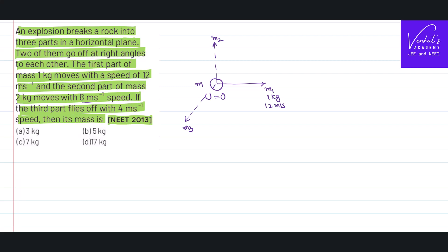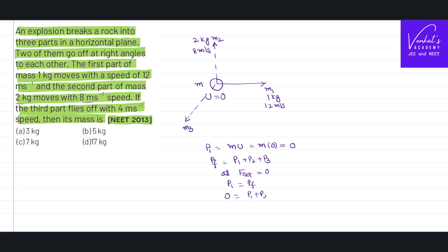m2 is a mass of 2 kilogram moving with a velocity of 8 meter per second. The initial momentum is 0 because the rock is initially in the state of rest. So initial momentum equals 0. The final momentum is: momentum of the first one plus momentum of the second one plus momentum of the third one. As no external forces are acting, momentum is conserved. So p_initial = 0, meaning p1 + p2 + p3 = 0.